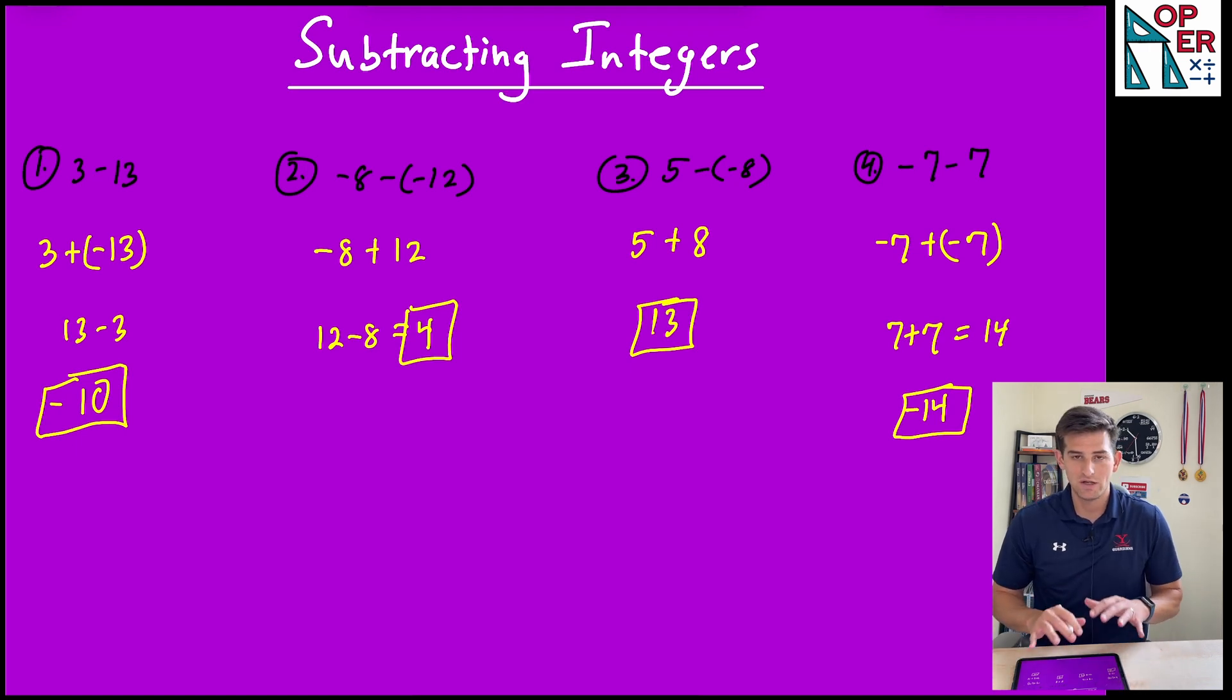As you can see, we had one example of each of the scenarios you might see. Number one was positive minus positive, number two was negative minus negative, number three was positive minus negative, and number four was negative minus positive. Hopefully that gives you an idea - one example of each of the ones you might see in class or on your homework. Now you know how to subtract integers.